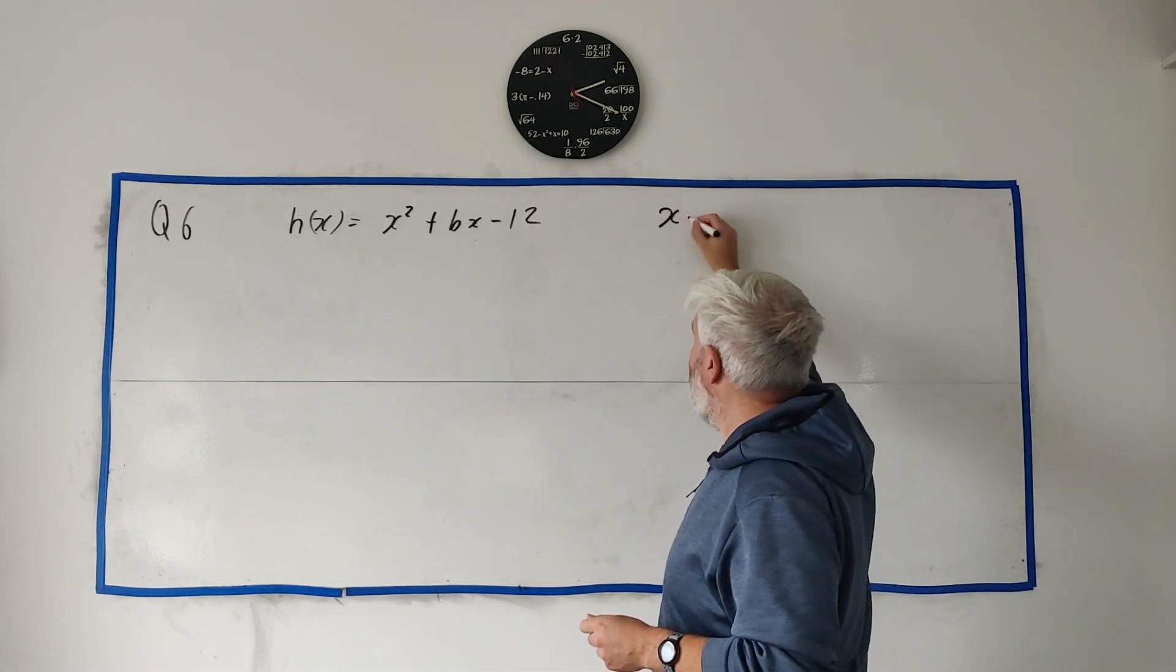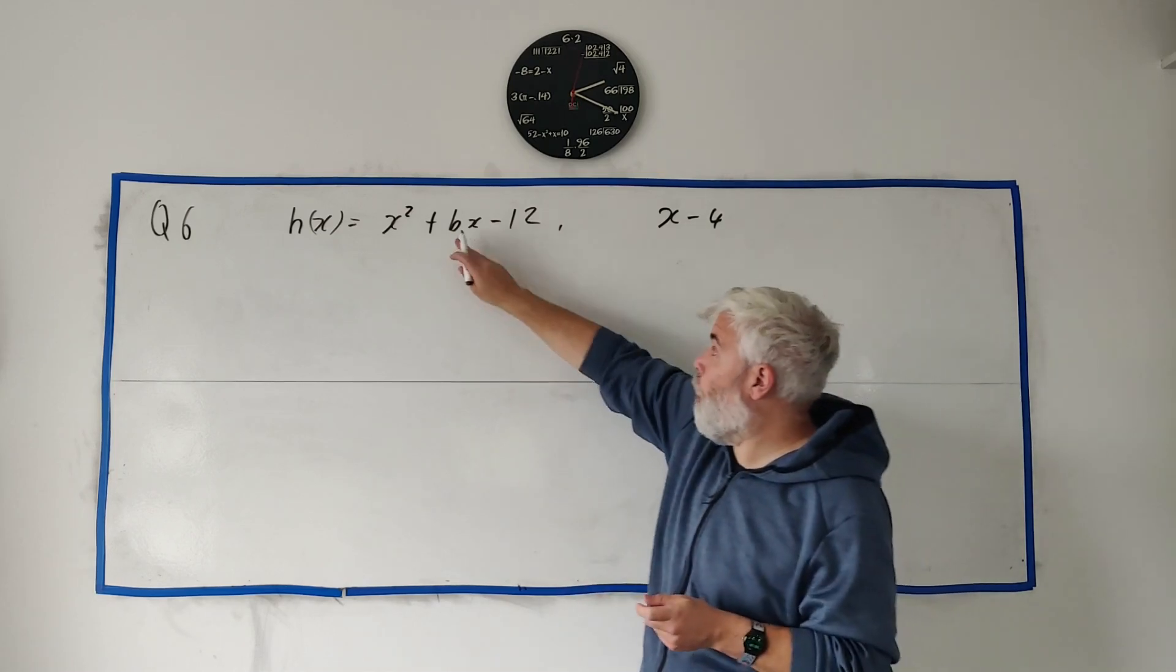Question 6 starts off with this algebra question. They give you a function here, h(x), and they tell you that x minus 4 is a factor of this function, and they ask you to find out what B is, what number is B. Now, I can think of three different ways to do this. Two easy-ish ways, so I'll show you both of them. And one, well, not hard, but just longer way to do it.